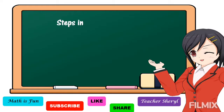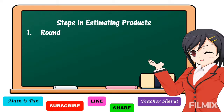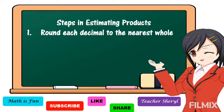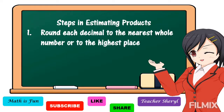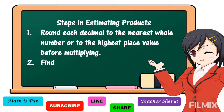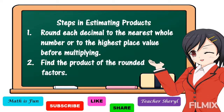Here are the steps in estimating a product. Number one: round the decimal to the nearest whole number or to the highest place value before multiplying. Number two: find the product of the rounded factors.